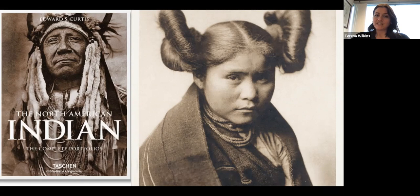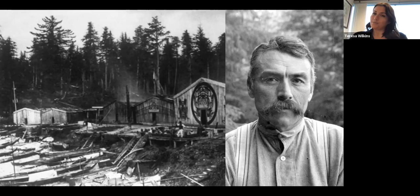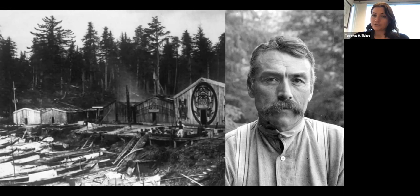In this two-decades-long endeavor, Curtis used many instruments including the motion picture camera. When he arrived on the northwest coast, he partnered with George Hunt — the son of a Hudson's Bay Company official and a noble Tlingit woman — who worked for the Jessup North Pacific Expedition and served as Curtis's advisor dealing with the peoples known as the Kwakwaka'wakw. The sheer visuals of the Pacific Northwest Coast really led Curtis to want to make a silent film about them.